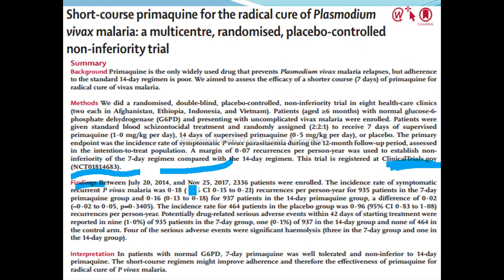Between July 2014 and November 2017, a total of 2,336 patients were enrolled. The incidence rate of symptomatic recurrent vivax malaria was 0.18 recurrences per person-year for 935 patients in the seven-day primaquine group, 0.16 for patients in the 14-day group, and 0.16 recurrences per person-year for 464 patients in the placebo group.